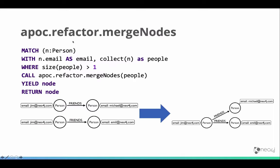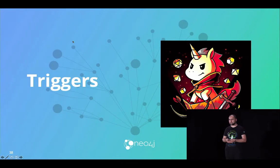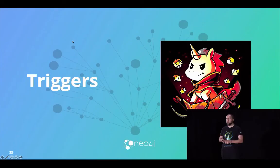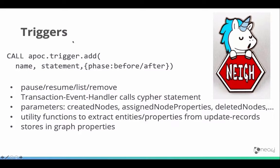Another commonly requested feature is dynamic labels and relationship types. APOC brings functions and procedures that allow you to modify or dynamically create nodes and relationships by adding labels and relationship types from expressions, enabling complex data imports. Triggers are also really cool — many databases have them, and APOC integrates with Neo4j's transaction event handler infrastructure. You can provide a Cypher statement that is executed as data is created in Neo4j in the commit hook, for instance to add properties like who was the creator of the data, an update timestamp, or to pass data to a secondary consumer.